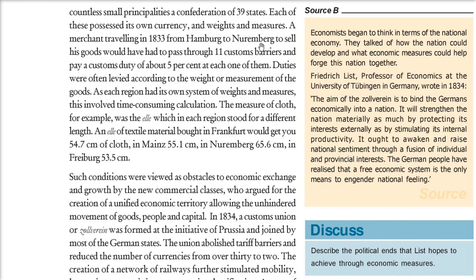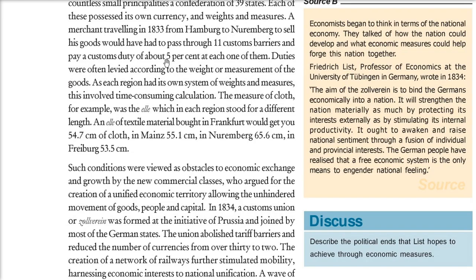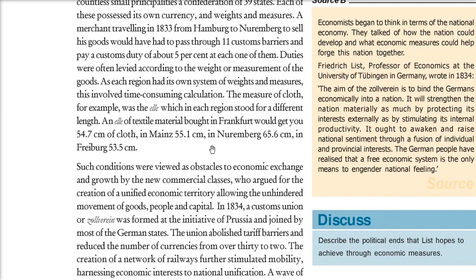For example, a cloth measurement called 'Elle' stood for different lengths in different regions: in Frankfurt it was 54.7 cm, in Mainz 55.1 cm, in Nuremberg 65.6 cm, and in Freiburg 53.5 cm. There was a vast difference in calculation alone. These were the conditions which liberals understood as obstacles. They wanted a unified combined economic area where goods, people, and capital could move smoothly and without hindrance.